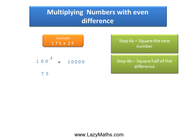And then the next step involves squaring half of the difference. Square of 75 equals 5625. Now here you can actually use the shortcut available on lazymaths.com which shows you how to square numbers ending in 5. You can use that shortcut and get the answer of 75 squared as 5625.